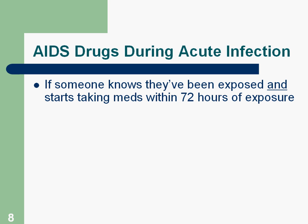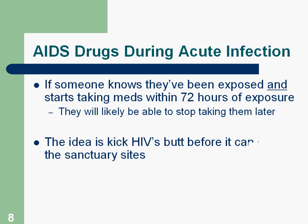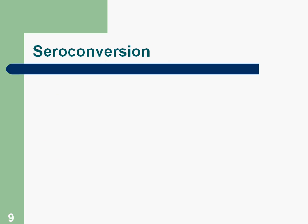There is actually the possibility of eradicating HIV during acute infection using AIDS drugs, if somebody knows they've been exposed and starts taking meds within 72 hours of exposure. The course of medicine usually lasts for a month. The idea is to stop HIV before it can get to the sanctuary sites — this is known as post-exposure prophylaxis. It only works if treatment begins within two to three days after exposure, and for most people that window isn't available.